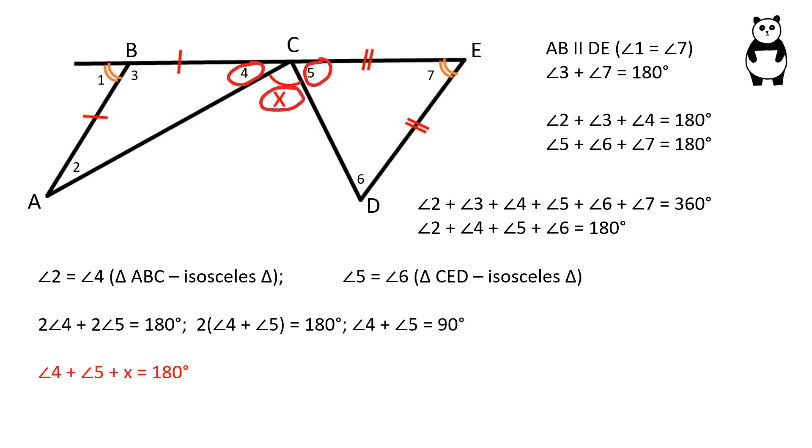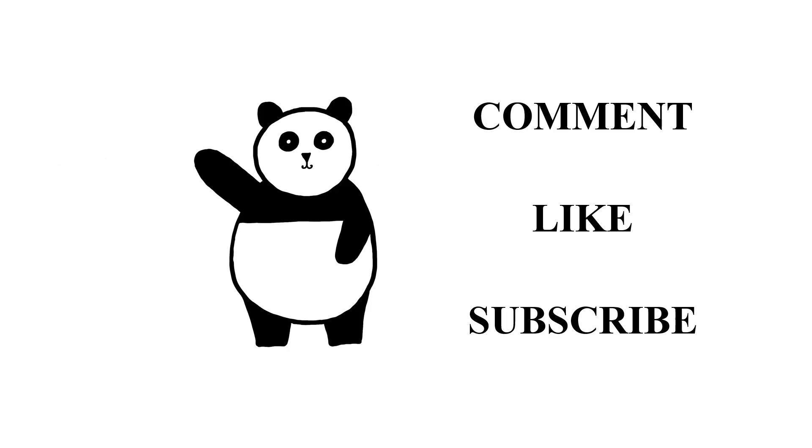Angle 4 plus angle 5 plus x is equal to 180 degrees, and since angle 4 plus angle 5 is equal to 90 degrees, x is equal to 90 degrees.